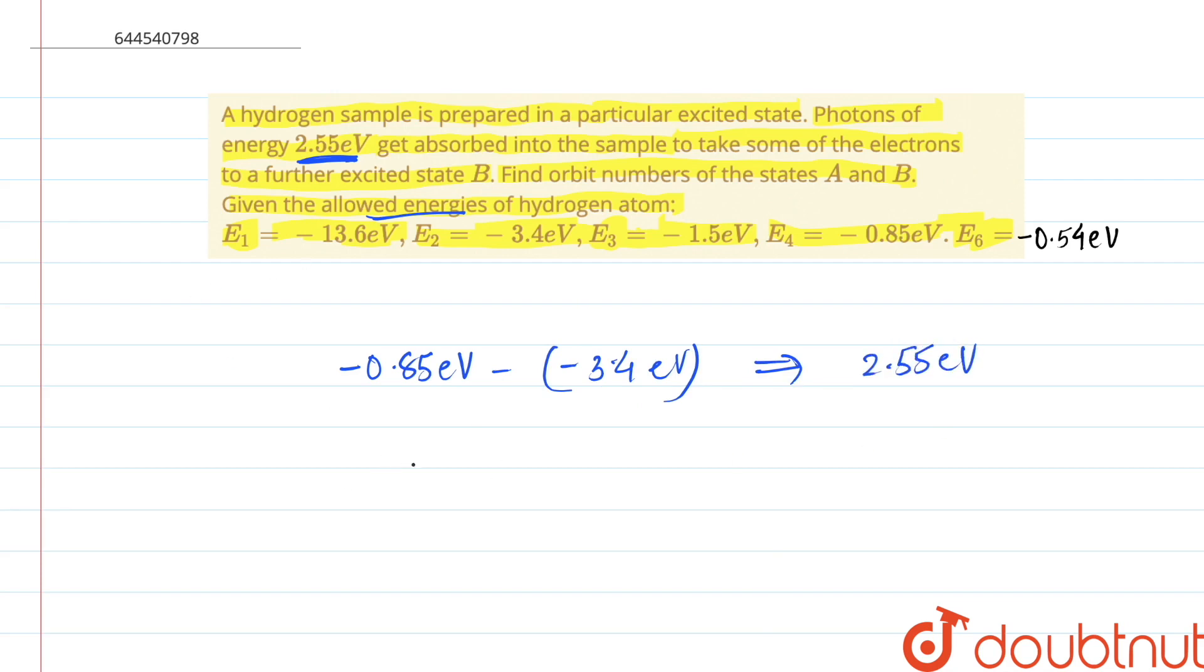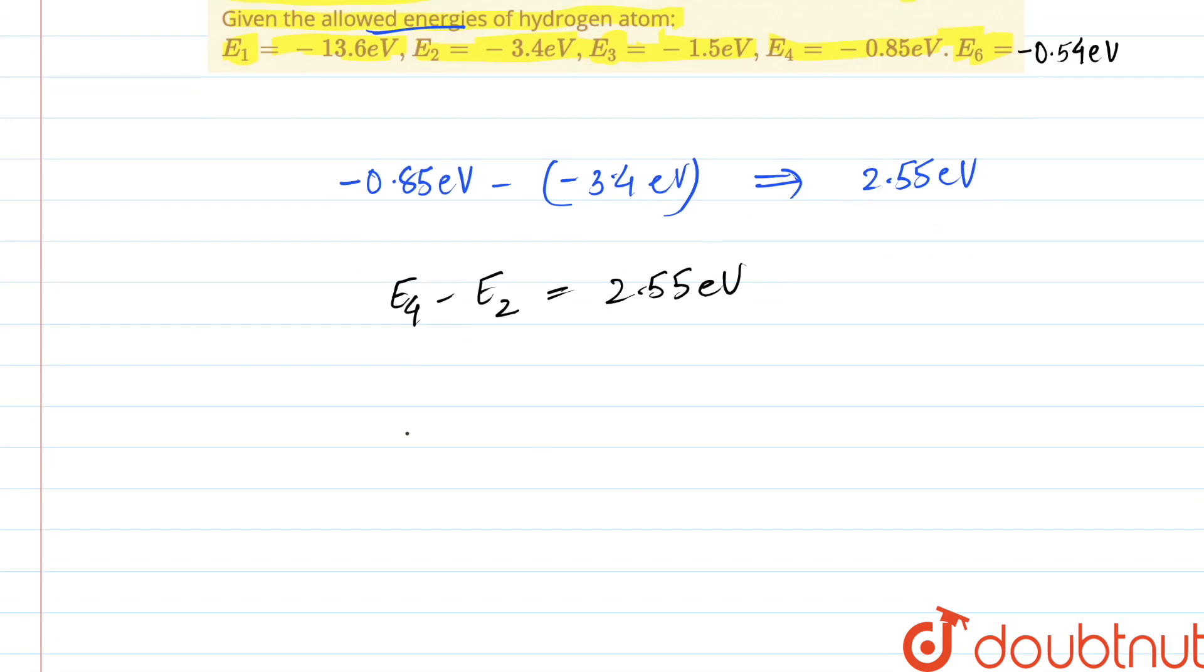Which comes out to be E4 minus E2 gives us 2.55 electron volts.